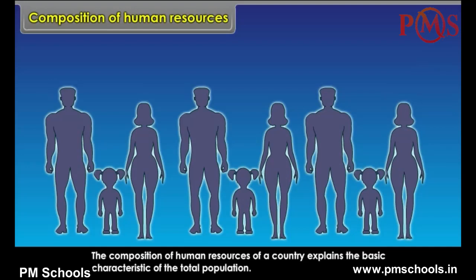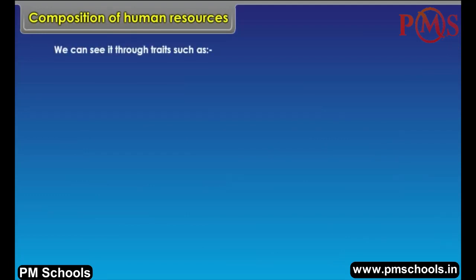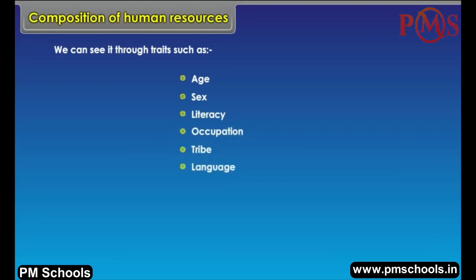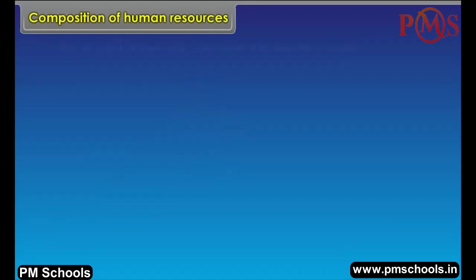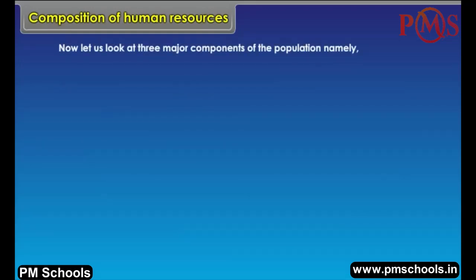Composition of Human Resources: The composition of human resources of a country explains the basic characteristic of the total population. We can see it through traits such as age, sex, literacy, occupation, tribe, language, and religion. The three major components of the population are: sex composition, age structure, and literacy levels.